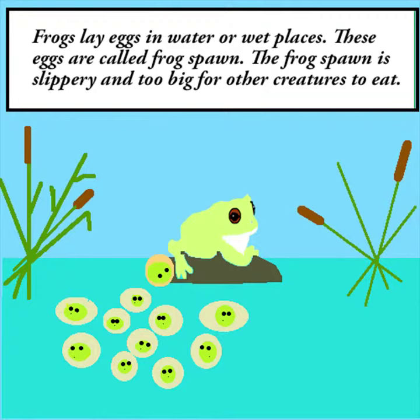Frogs lay eggs in water or wet places. These eggs are called frog spawn. The frog spawn is slippery and too big for other creatures to eat.